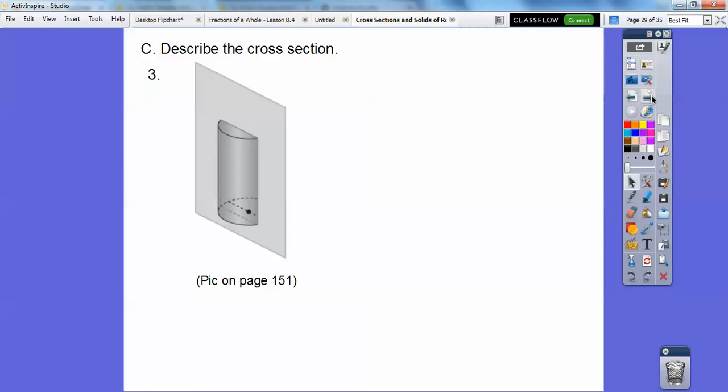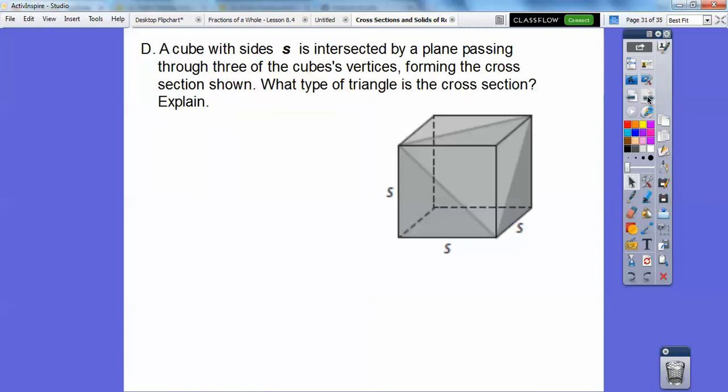How about this guy right here? What's this cross section? This guy right here. Down here, over here, over here. Sure looks like a rectangle to me.